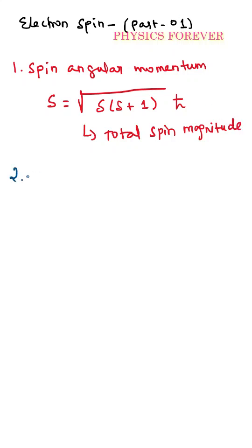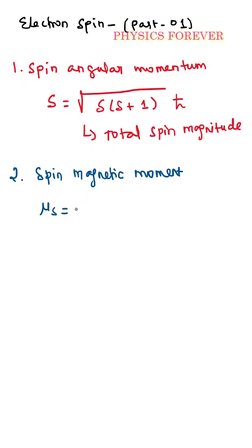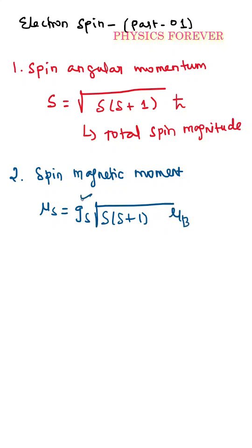Second, spin magnetic momentum. Here, gs is the Landé g-factor, which gives √(s(s+1)) times μB. For most important angular spin cases, gs will be present.